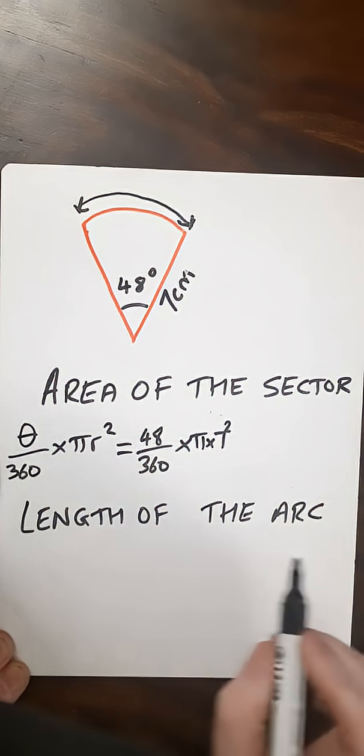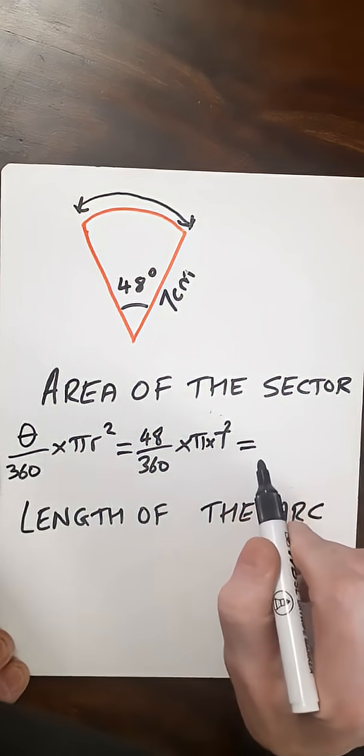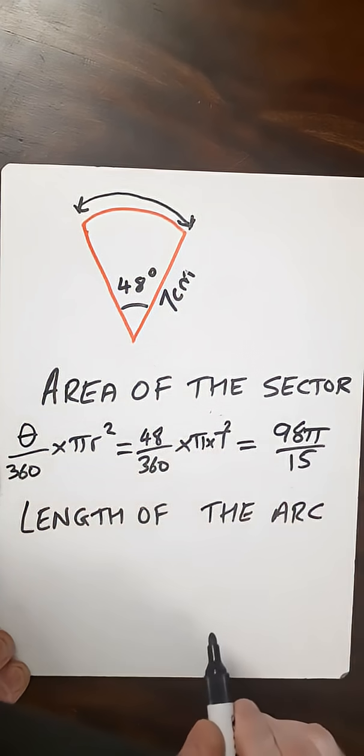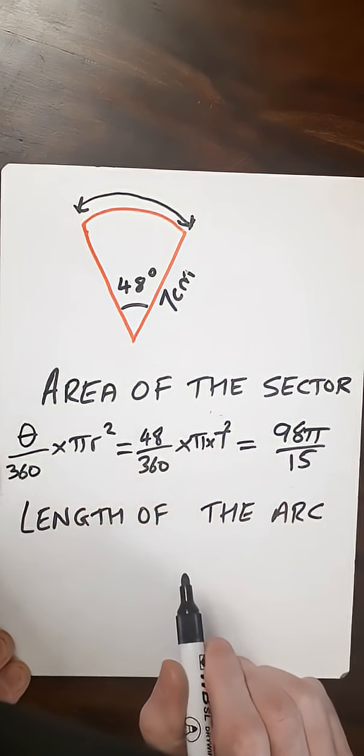Put all those values into our calculator and we'll end up with 98 pi over 15. Then if you want the length of the arc,